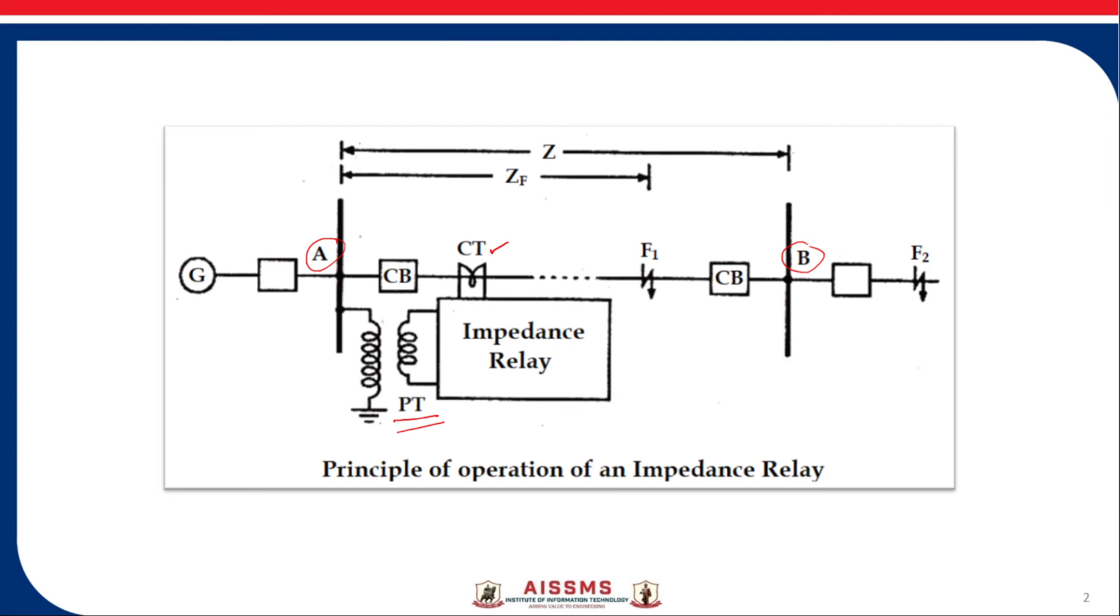Under normal operating condition, the impedance of the protected zone is Z. The relay is so designed that it closes its contacts whenever impedance of the protected section falls below the predetermined value Z.